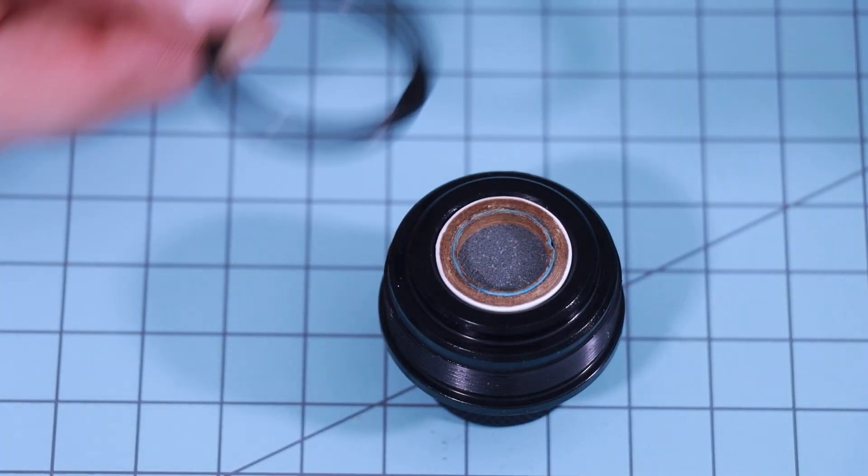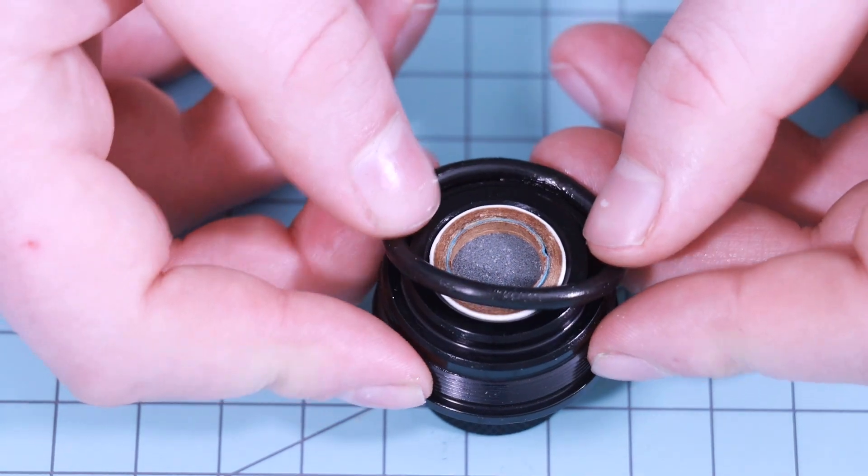Now I'm going to take the forward o-ring and slip it over the shoulder of the forward closure.